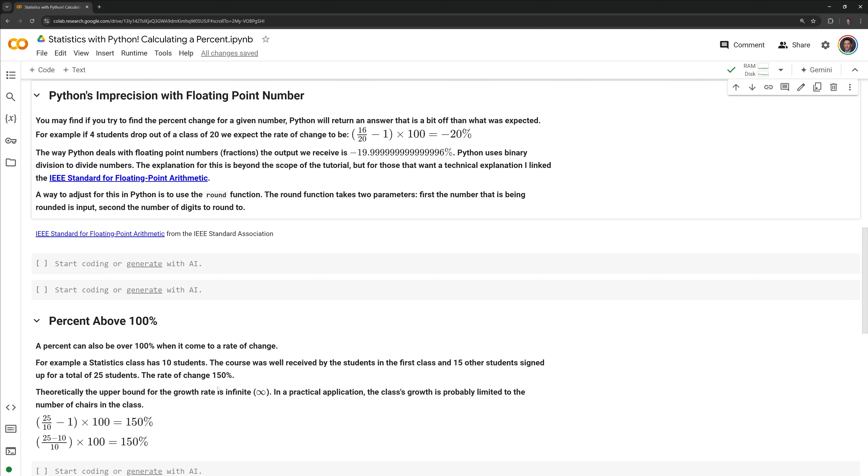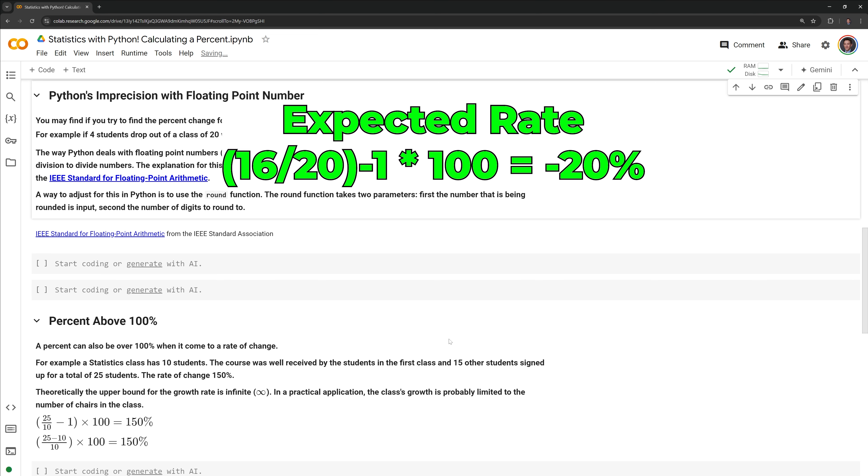You may find if you try to find the percent for a given number, Python will return an answer that is a bit off than what was expected. For example, if four students drop out of a class of 20, we expect the rate of change to be negative 20 percent.